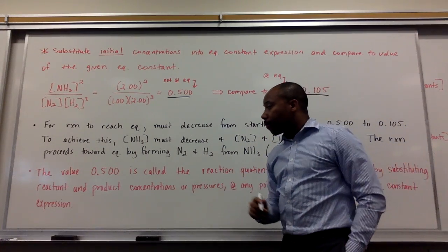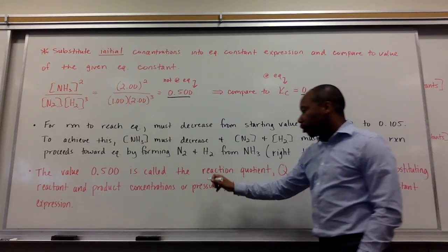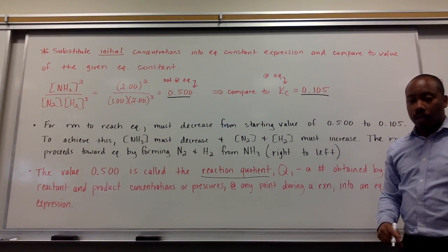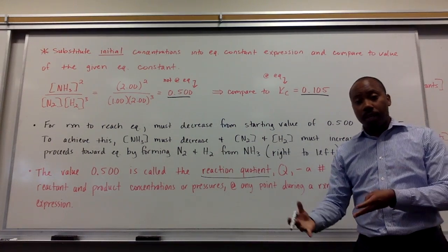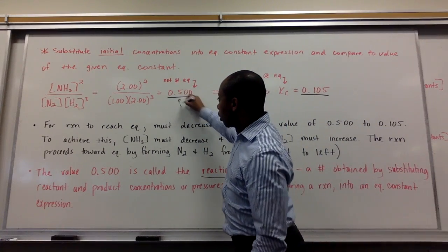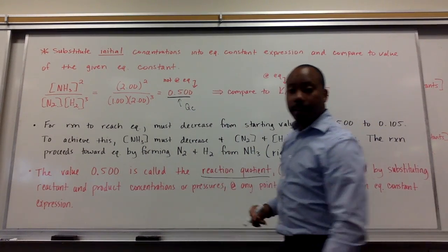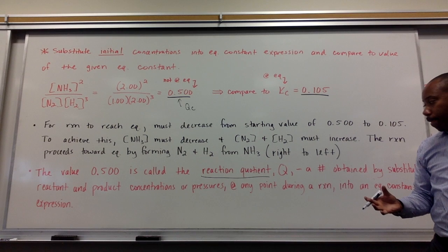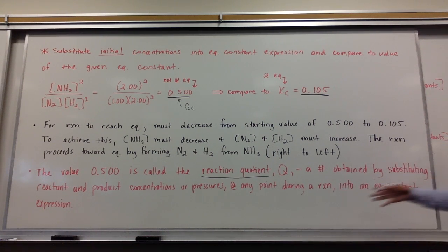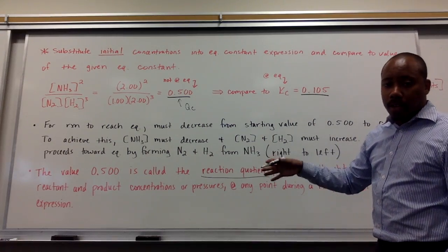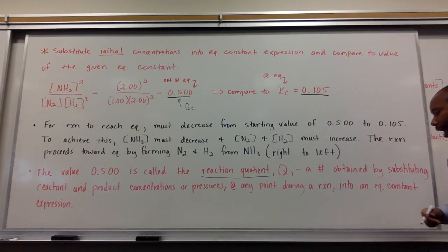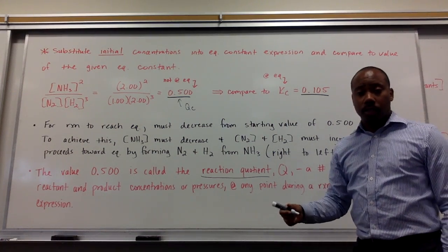The value of 0.500 is called your reaction quotient. It's given by the symbol Q. If we're dealing with pressures, it's Q sub P. If we're dealing with concentrations, as we are now, it's Q sub C. So, this is your Q sub C, your reaction quotient. By definition, it's a number obtained by substituting reactants and product concentrations or pressures at any point during a reaction into the equilibrium constant expression.